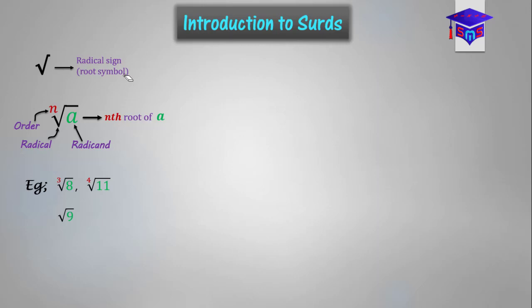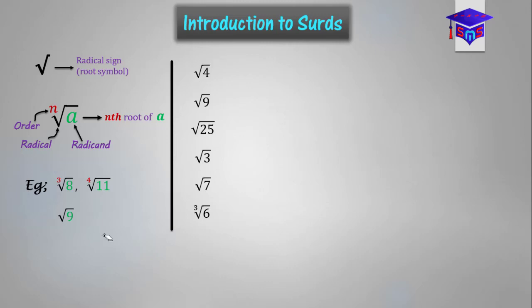But it's not every number that has a radical sign that is a surd. Let's look at these numbers. If you have the square root of 4, the square root of 9, and the square root of 25, the square root of 4 simplifies to give you 2. The square root of 9 likewise simplifies to 3, which is a rational number. The square root of 25 gives you 5, which is also a rational number.